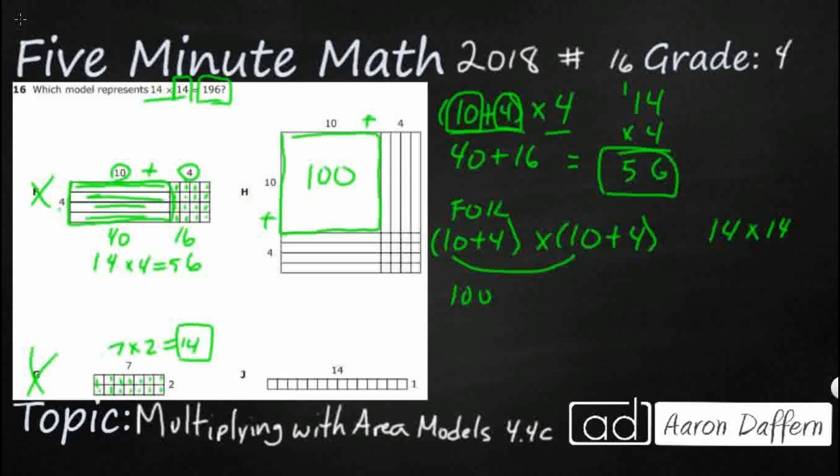And then we're going to do the outer. So 10 times this 4, so there's your 40 right here. And then you've got your inner, 4 times 10, which is another 40 down here. And then your last, your 4 times 4, that's 16. That's it right there. So that's how that works.